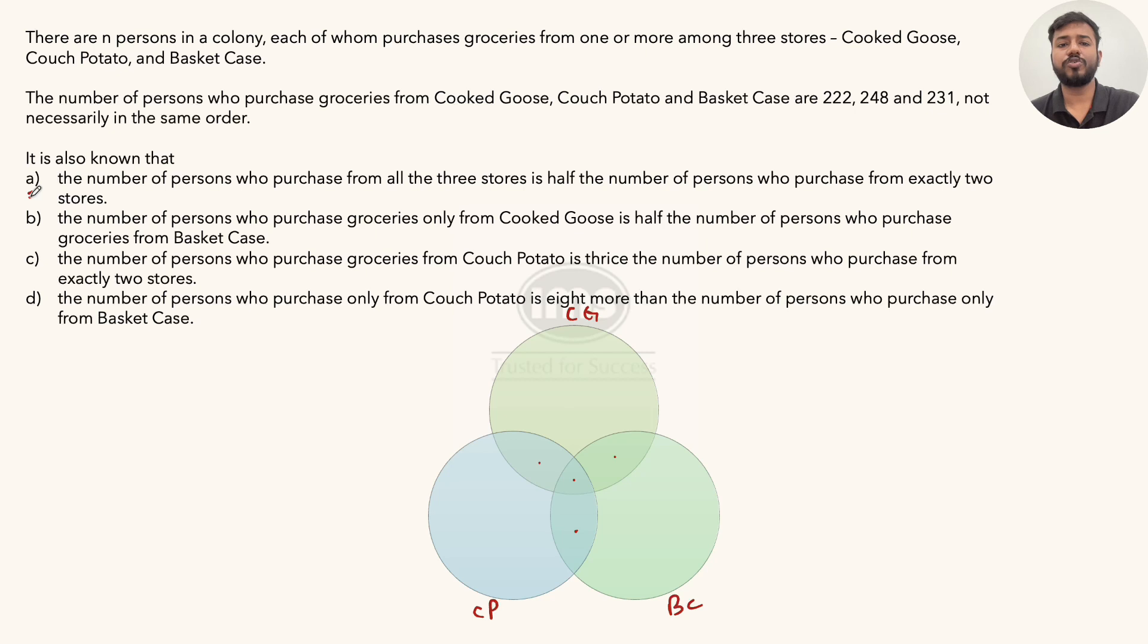The next point B: The number of persons who purchase groceries only from Cooked Goose, this value, is half the number of persons who purchase groceries from Basket Case. Now, we don't know the order of the three grocery stores. It can be anything. But then, there are certain conditions like this B part.